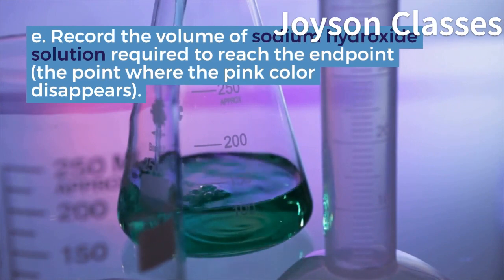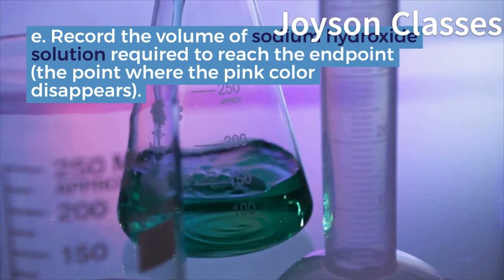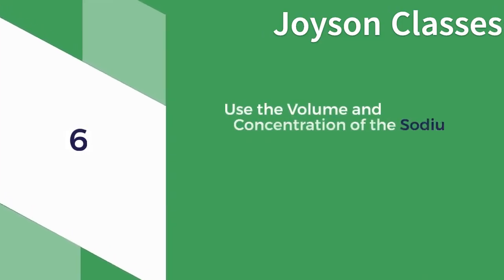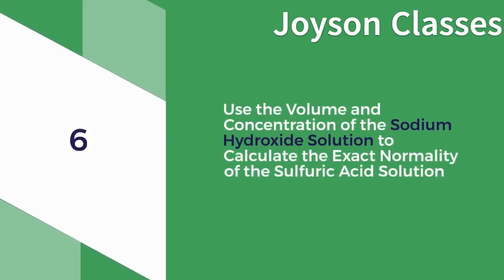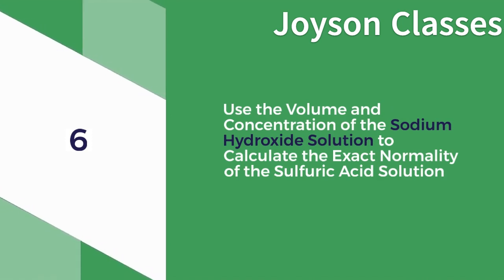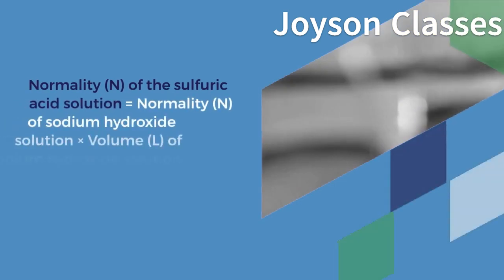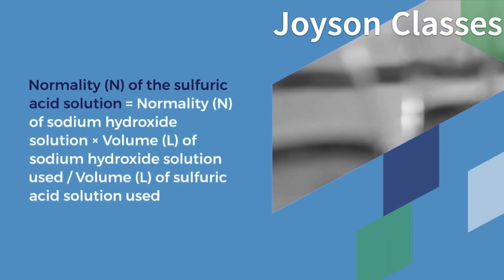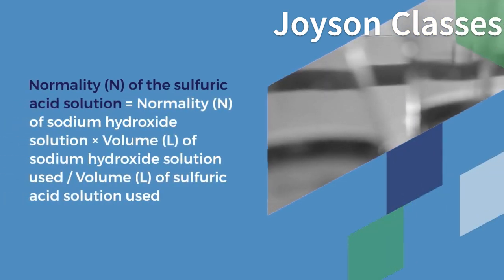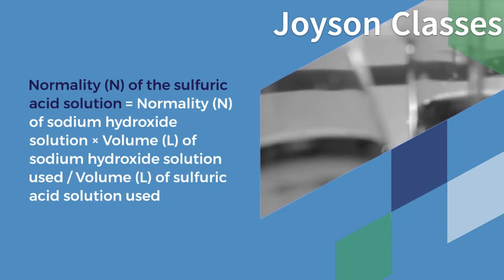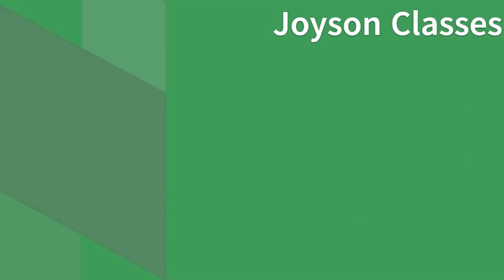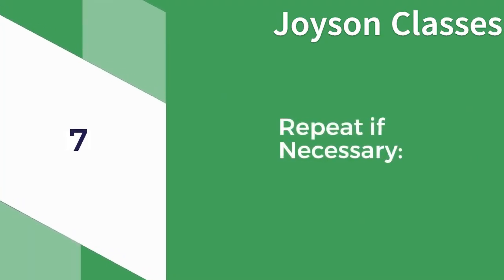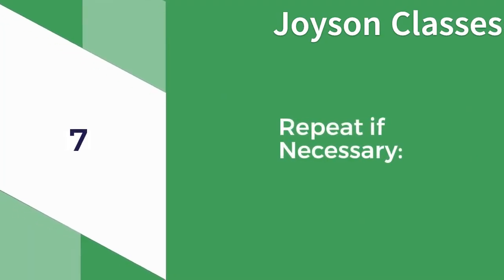6. Use the volume and concentration of the sodium hydroxide solution to calculate the exact normality of the sulfuric acid solution. Normality (N) of the sulfuric acid solution = Normality (N) of sodium hydroxide solution × Volume (L) of sodium hydroxide solution used / Volume (L) of sulfuric acid solution used.